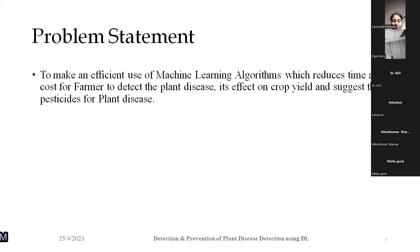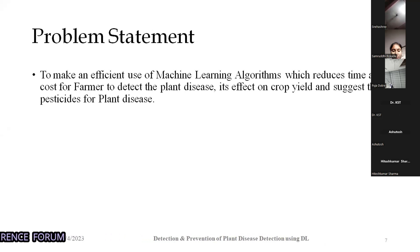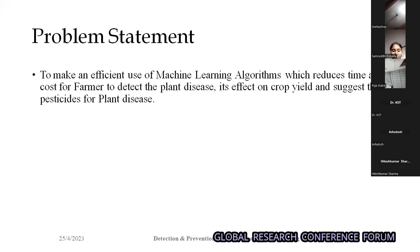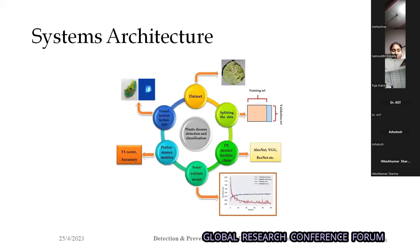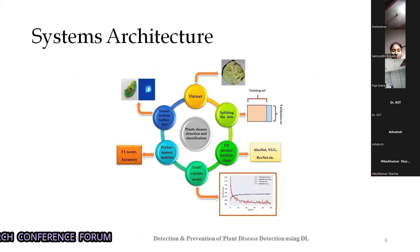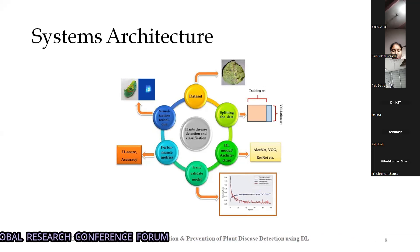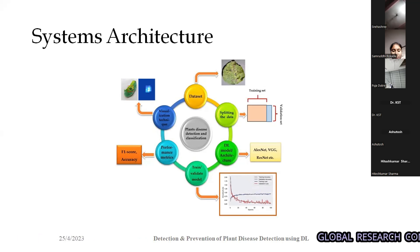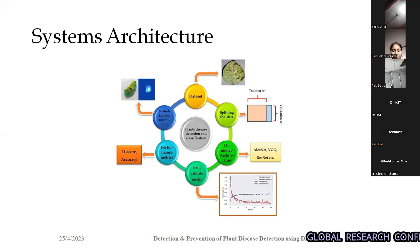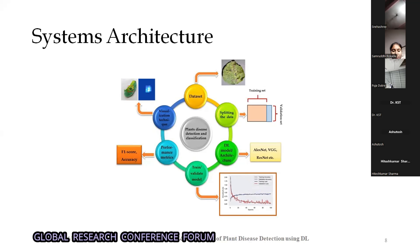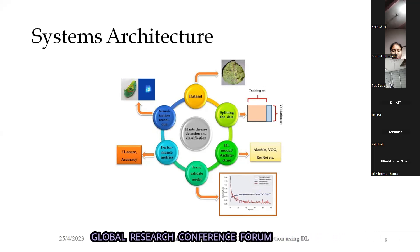Our actual problem statement is to make efficient use of a machine learning algorithm that reduces time and cost for farmers to detect plant disease, assess its effect on crop yield, and suggest pesticides for treatment. First, we take a dataset and split it into a training set and a validation set. Next, we use a deep learning model architecture — specifically two CNN models. We then train and validate the model, and use performance metrics including F1 score and accuracy. We also apply visualization techniques.